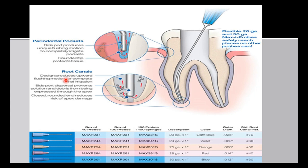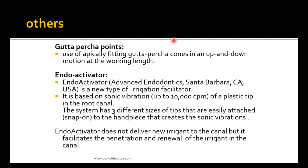Different needle designs include side-vented needles and beveled needles. Side-vented needles can also be used to clean periodontal pockets; the tip is rounded to protect tissue. When used in the root canal, the design produces an upward flossing motion for complete canal irrigation. Side-port dispersal prevents solution and debris from being expressed forcefully through the apex, and the closed rounded end reduces the risk of apex damage. Use of a well-fitting gutta-percha point in an up-and-down motion at working length is also effective.